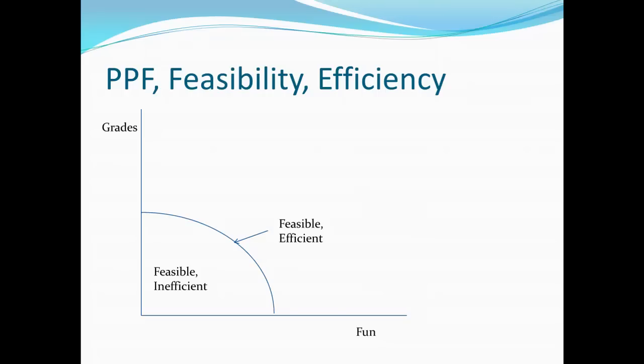But then there is this whole other region that falls outside the curve. We declare this to be not feasible. That is, it is impossible to get this combination of grades and fun. I would like, for example, to have extremely high grades and yet to never study. But that is just not possible. It is not feasible. And the production possibility frontier demonstrates that by showing that region being outside the production possibility frontier.